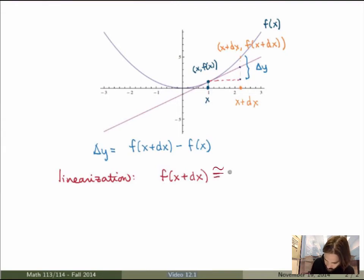So here at x plus dx what I would get is the value of the function at the point x plus the value of the derivative at the point x times the difference between the two points, which is just dx. So that would be my linearization.